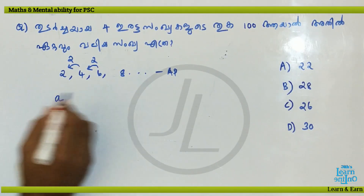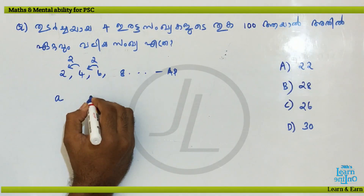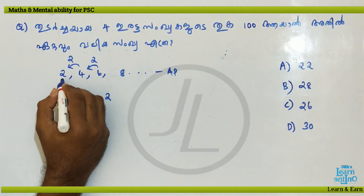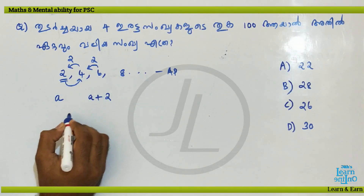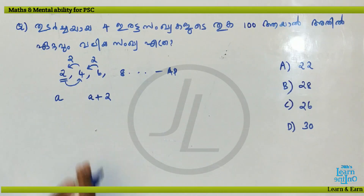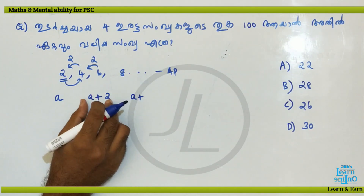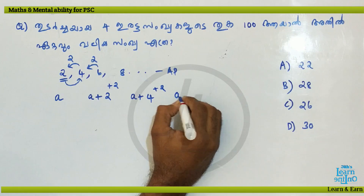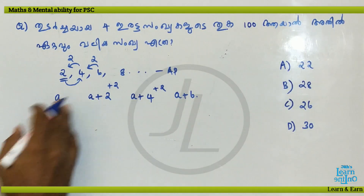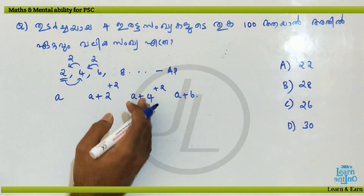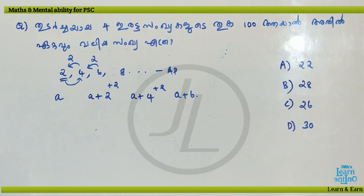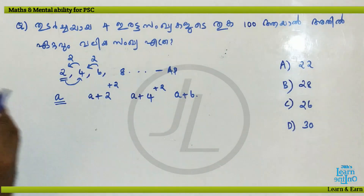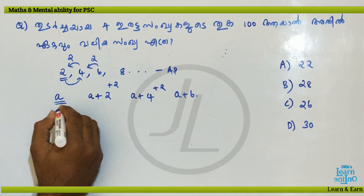So we have to take a look for the number in common. There are also two to 5. We have to take a look for the number in common. A plus 2, A plus 2, A plus 4, A plus 2, A plus 6. These are the four values: A plus 2, A plus 4, A plus 6. This is the value of 10.